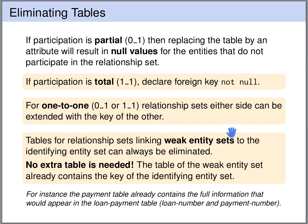For an example, you can look a few slides back at the loan and payment table. The payment table already contains the primary key of the loan, the loan number. And it contains the discriminator of the payment, the payment number. So this is the full information that would appear in the translation of the loan payment relationship set.